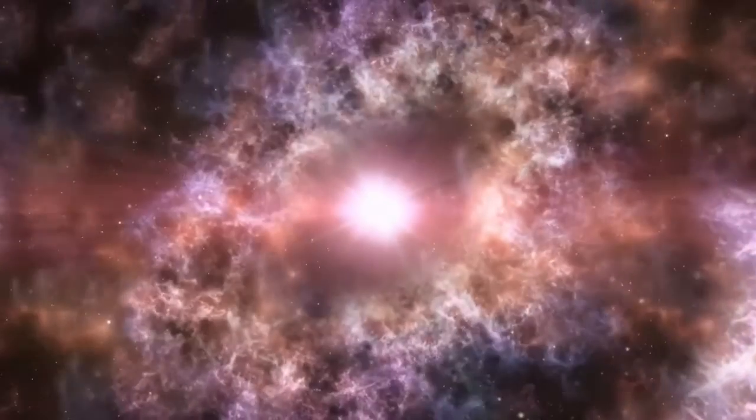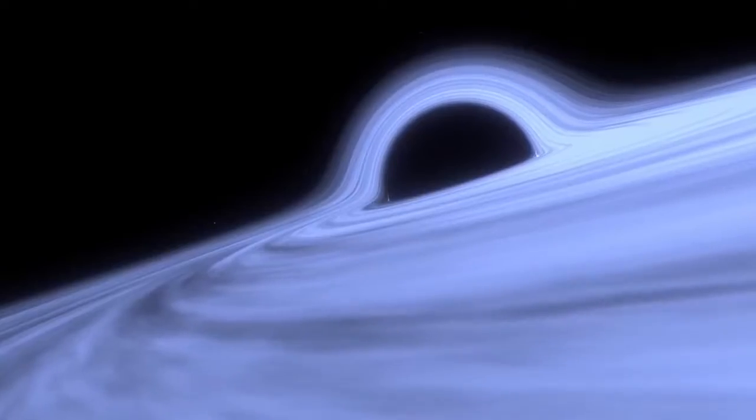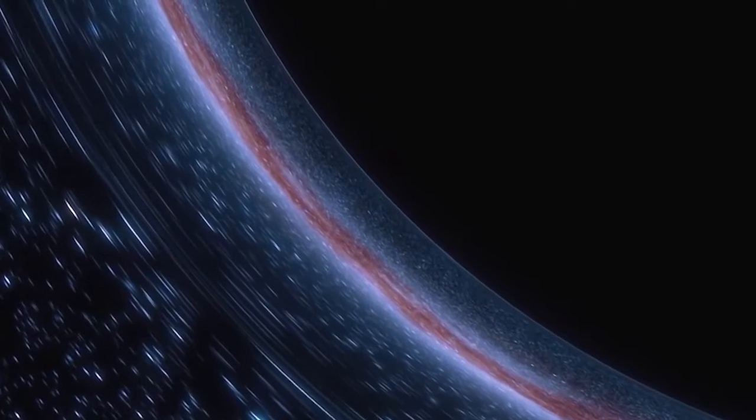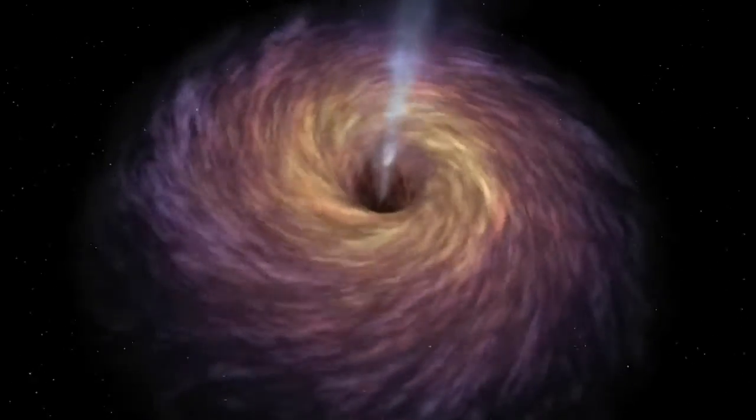Dark matter makes up over 80% of all the matter in the universe, but it doesn't directly interact with light in any way. It just floats around being massive, affecting the gravity within galaxies.